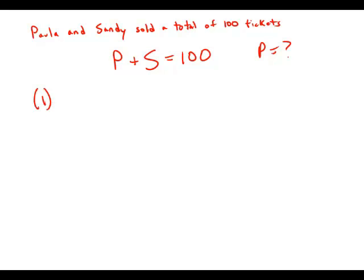Statement number one tells us that Sandy sold two thirds as many of the tickets as Paula did. So what Sandy sold equals two thirds of what Paula sold. Now what we have is two equations and two unknowns. Two equations would allow us to solve. So this statement by itself is sufficient. This would allow us to solve for the value of P.